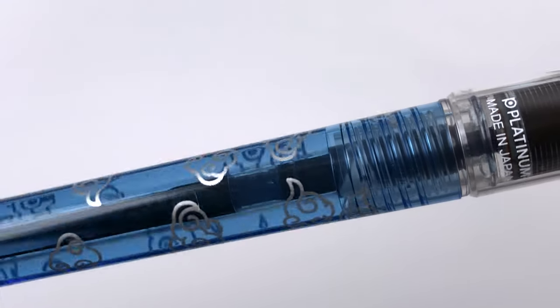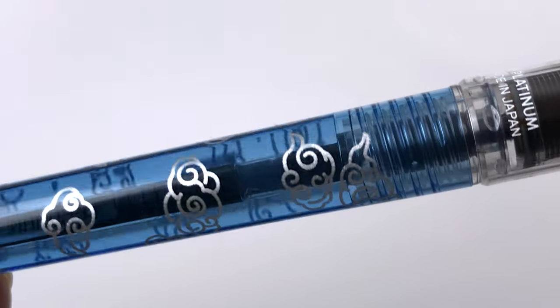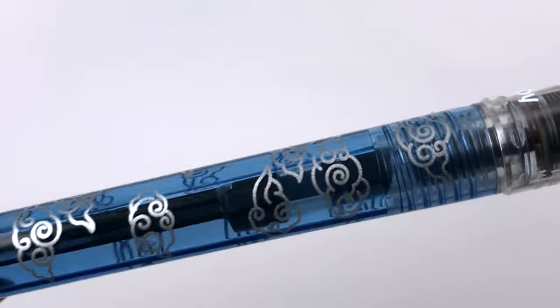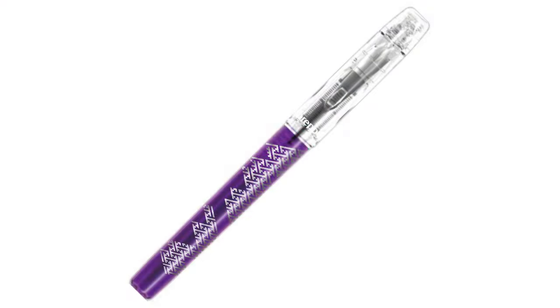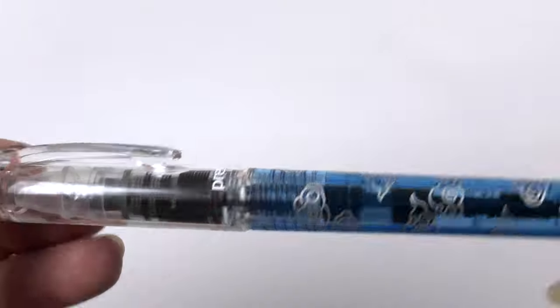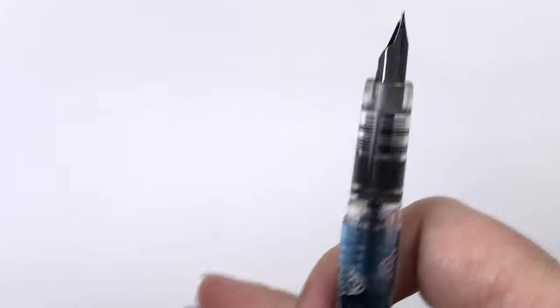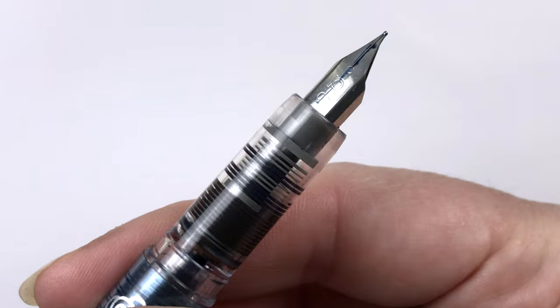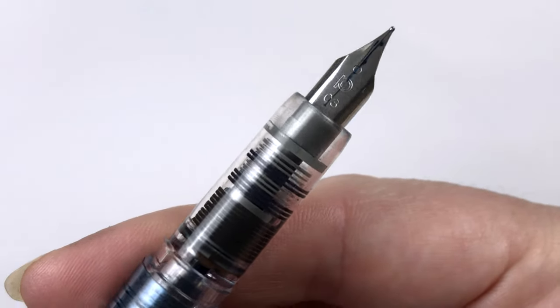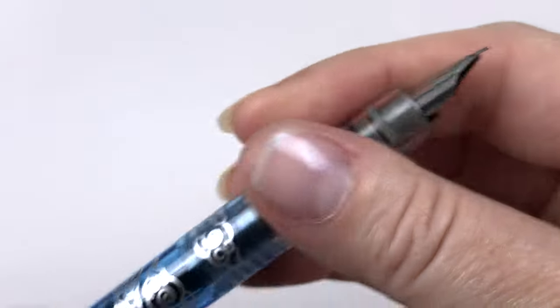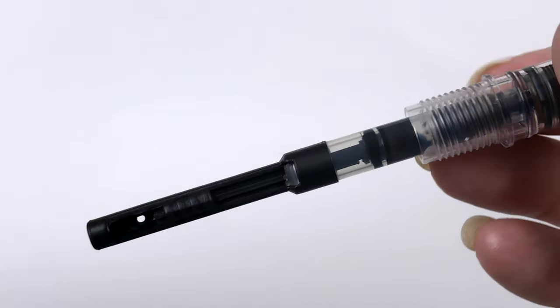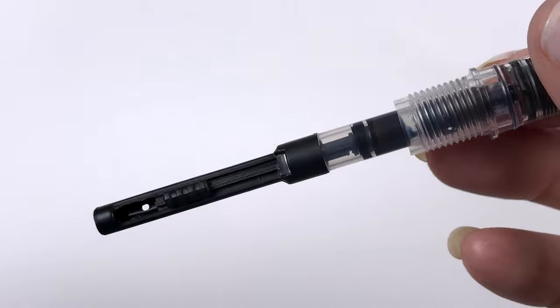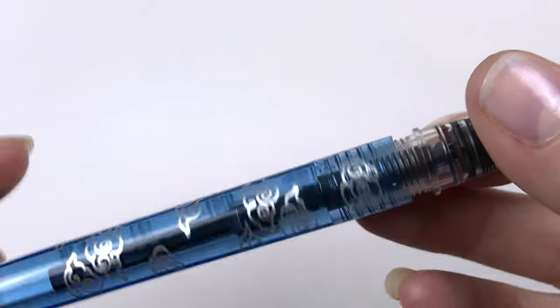This one here is another Platinum Preppy in a fine, and this is part of the Japanese wa collection. They had maybe five or six colors with different designs on them and they're really pretty, but they are exactly the same pen. This is the 0.3 fine. The great thing about all of these Preppies is that you can unscrew that section that has the nib on it and just switch it. So if you wanted this barrel on an extra fine, you could take it off and put it on the other pen.